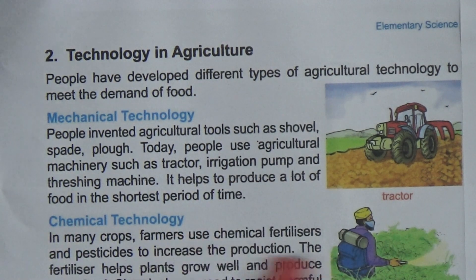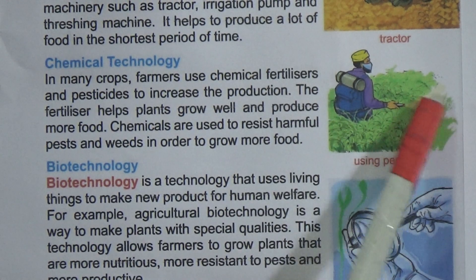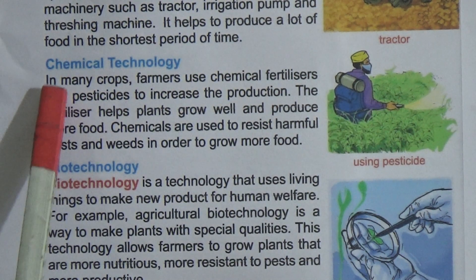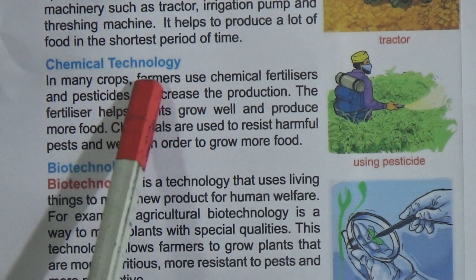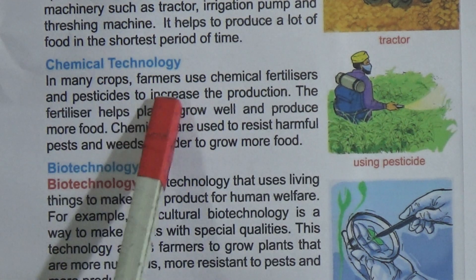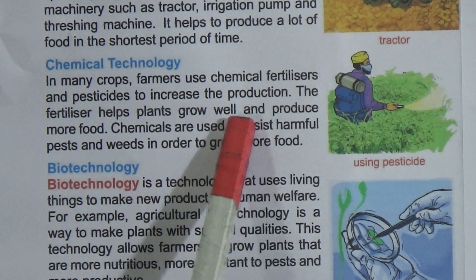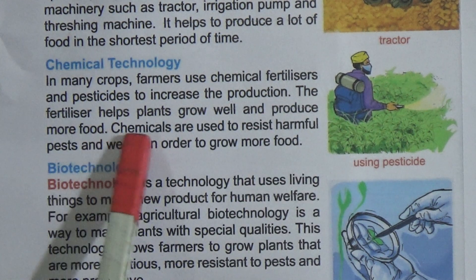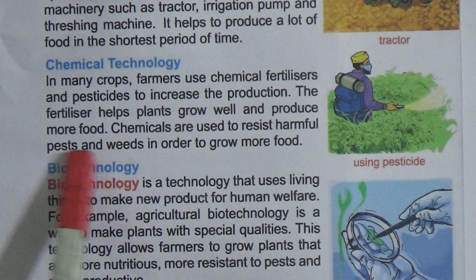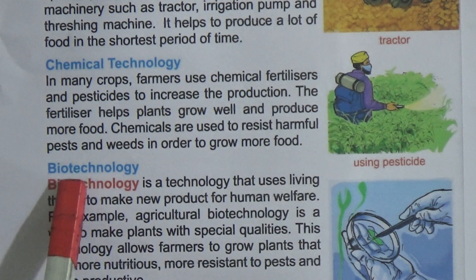Come to chemical technology. A person spreading pesticide — this is a chemical and this is known as chemical technology. Farmers use chemical fertilizers and pesticides to increase their production. The fertilizer helps plants grow well and produce more food. Chemicals are used to resist harmful pests and weeds in order to grow more food.